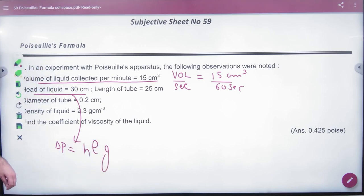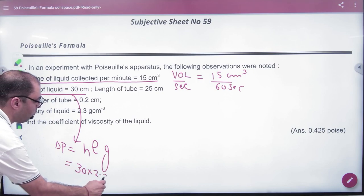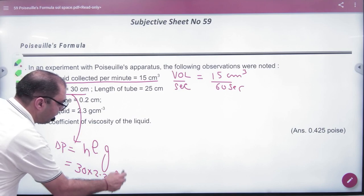Rho G. So you know the density of liquid is 2.3. How much? 30. Into CGS, 2.3. CGS, 980. CGS.